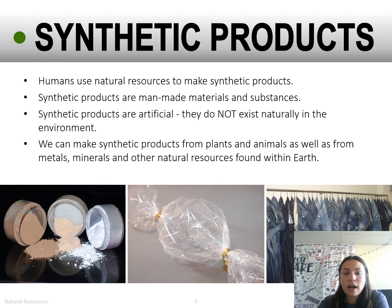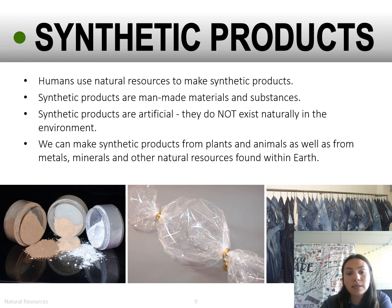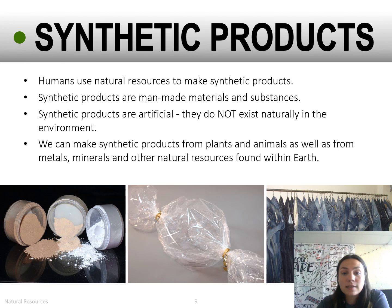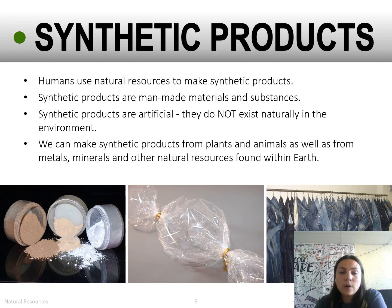This slide isn't on your guided notes — it's just some background information on synthetic products. We use our natural resources to make synthetic products. Synthetic products are man-made materials and substances; they are artificial and do not exist naturally in the environment — we make them. We can make synthetic products from plants and animals, as well as from metals, minerals, and other natural resources found within Earth.